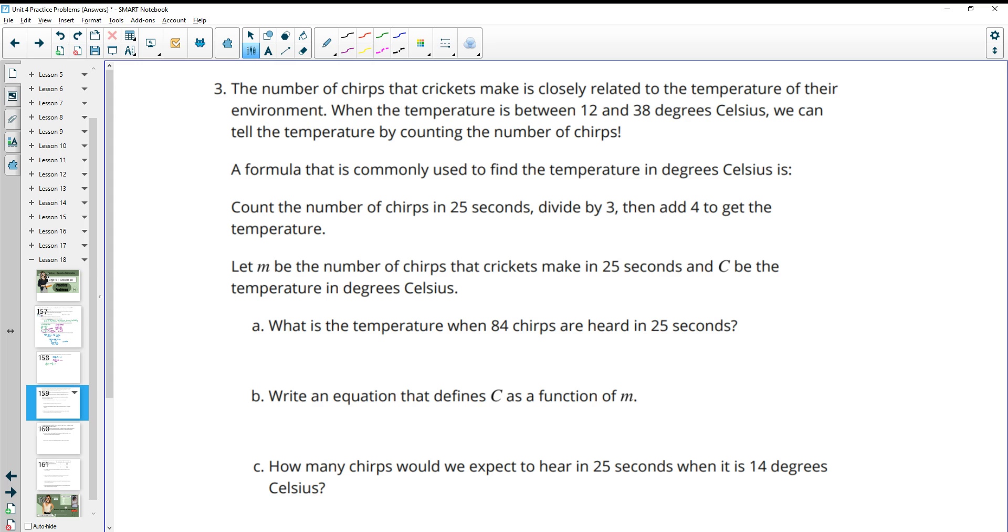Number 3, the number of chirps that a cricket makes is closely related to the temperature of their environment. When the temperature is between 12 and 38 degrees, we can tell the temperature by counting the number of chirps. The formula that's commonly used is to count the number of chirps in 25 seconds, divide that number by 3, then add 4 to get the temperature. What is the temperature when there are 84 chirps heard in 25 seconds? So we're going to take the 84 chirps and divide it by 3, then add 4. So 84 divided by 3 gives us 28, and then we'll add 4, and we find out that it's 32 degrees Celsius.